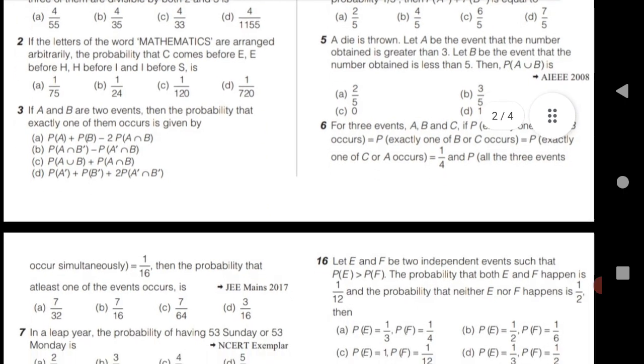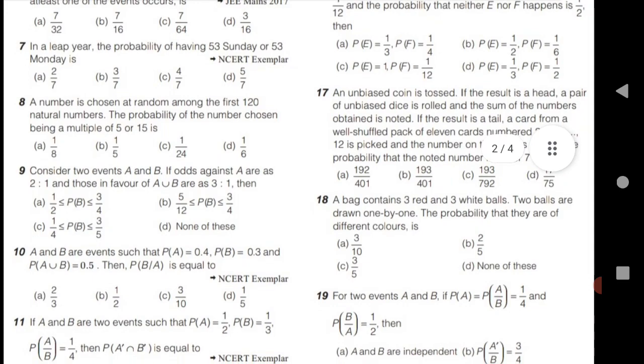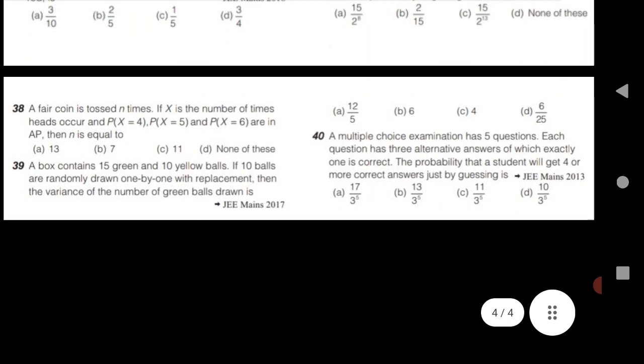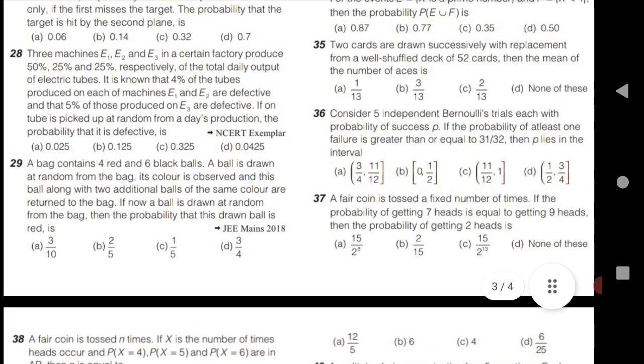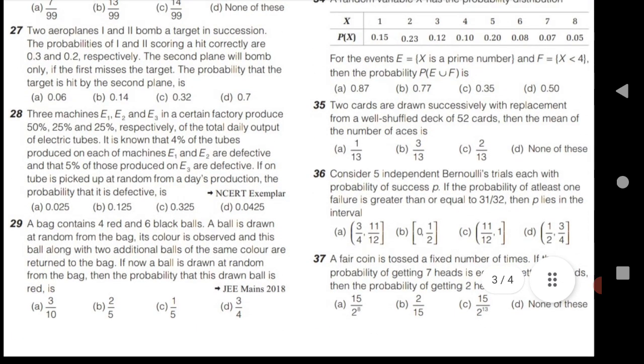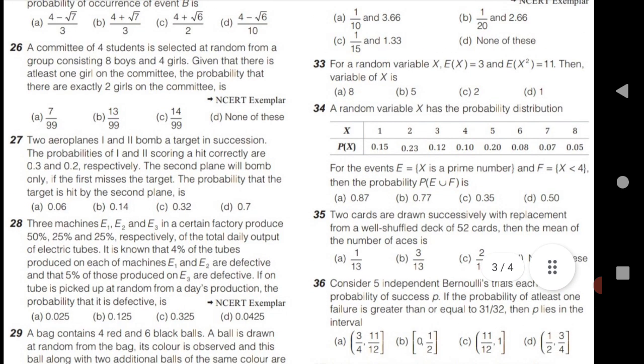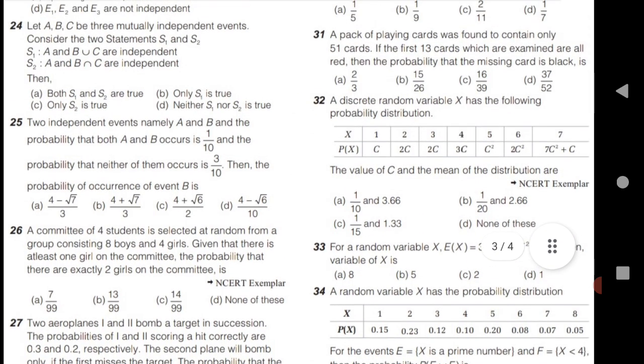For probability, we have given 30 to 40 MCQs. These are very important MCQs. We know that for TS and AP MSET exams, four to five questions will come from probability and measures of dispersion.